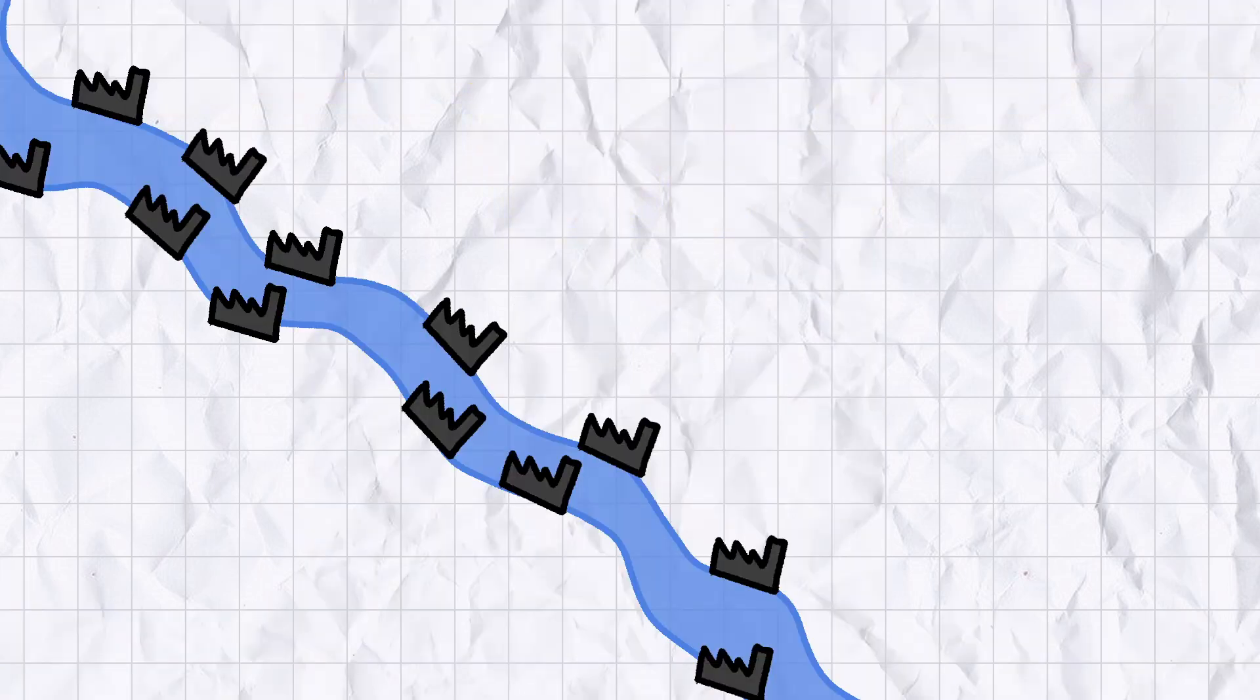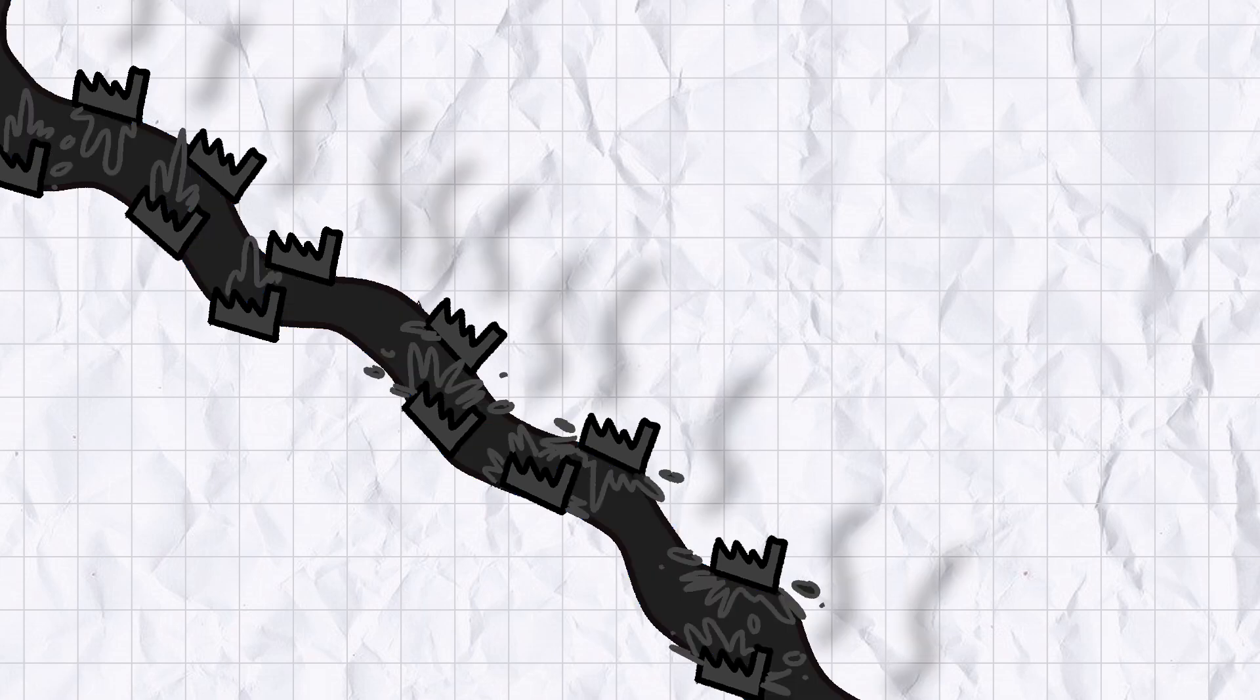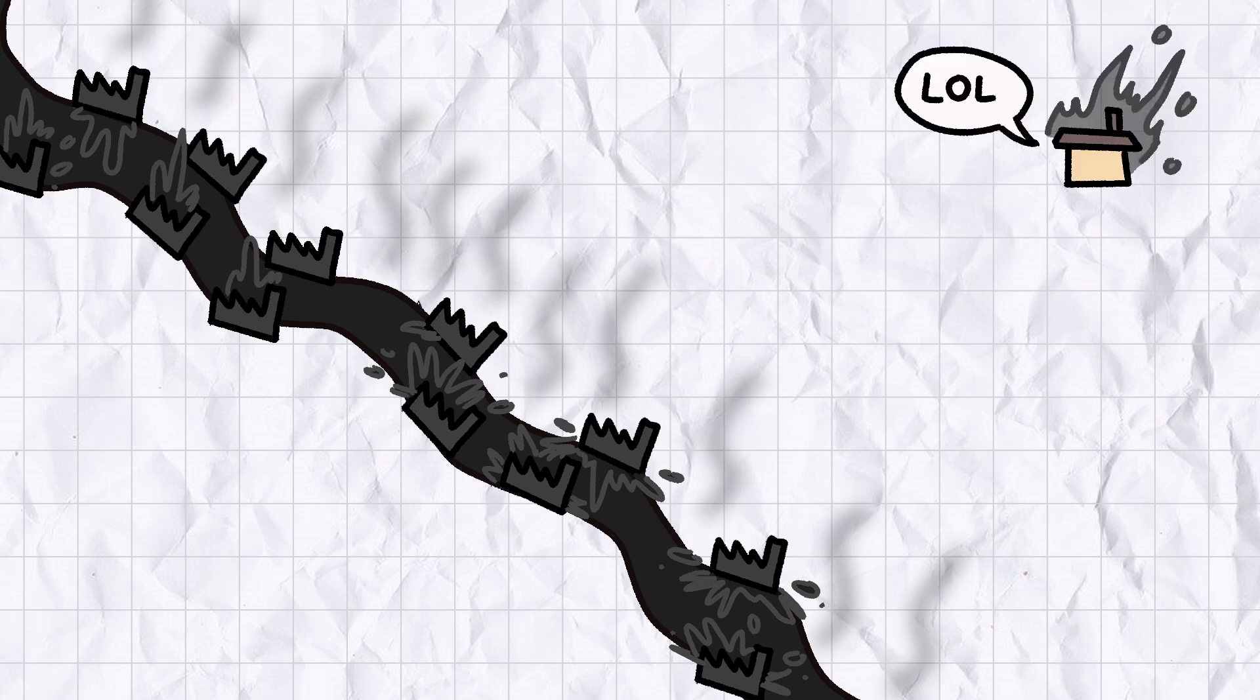In 2010, there were over 200 tanneries in Dhaka alone, and thanks to lax environmental regulation, they were allowed to spend decades dumping untreated chromate waste straight into the Buriganga. But even Bangladeshis living hundreds of miles from Dhaka weren't safe from the insidious bruise of Poo Lagoon.